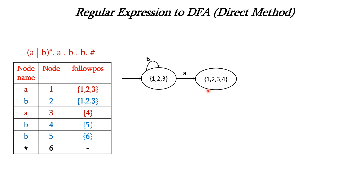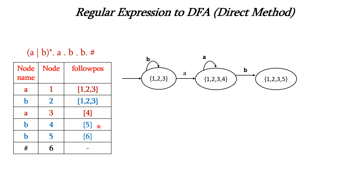Now consider the new state {1,2,3,4} on input A and B. On input A: nodes 1 and 3 are A, followpos union = {1,2,3,4}, so it goes to itself. On input B: nodes 2 and 4 are B, followpos = {1,2,3} ∪ {5} = {1,2,3,5}. So state {1,2,3,4} on B goes to the new state {1,2,3,5}.